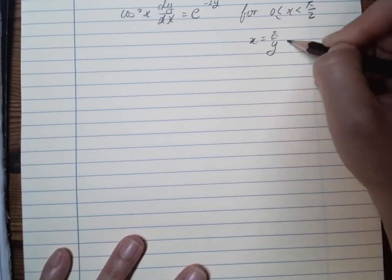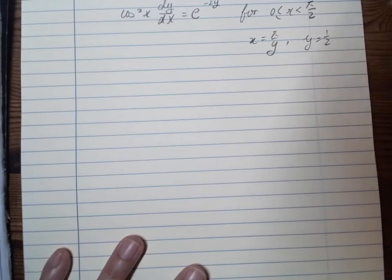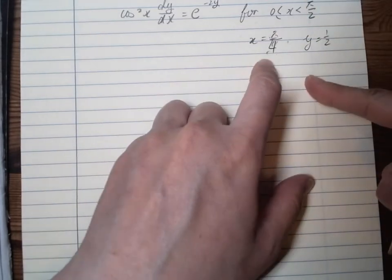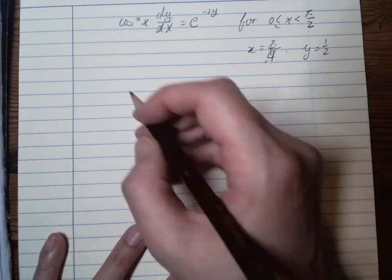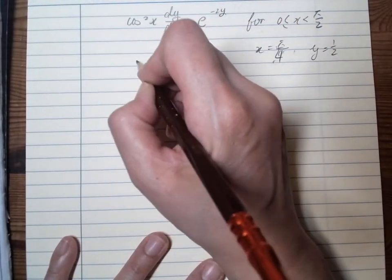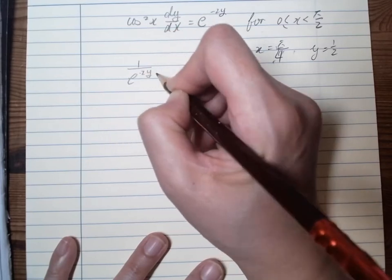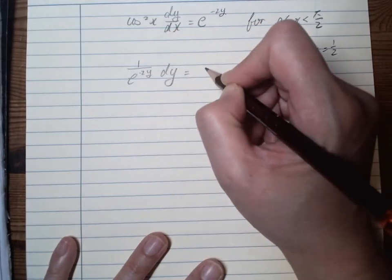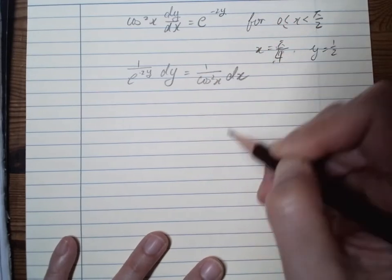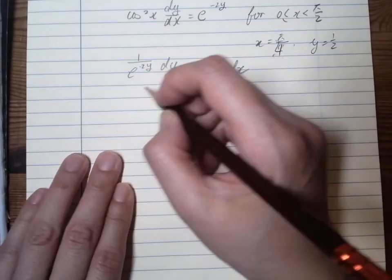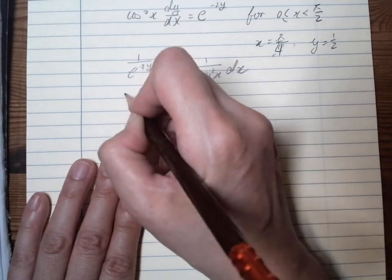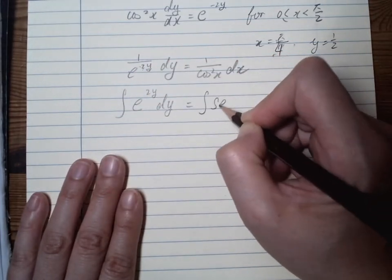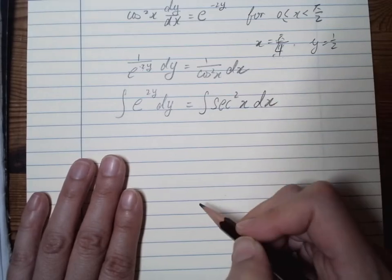The initial condition is: when x equals pi over 4, y equals one half. Since we have an initial value, we need to find c. Rearranging: 1 over e^(negative 2y) dy equals 1 over cos squared x dx, which is sec squared x. So we have e^(2y) dy equals sec squared x dx.